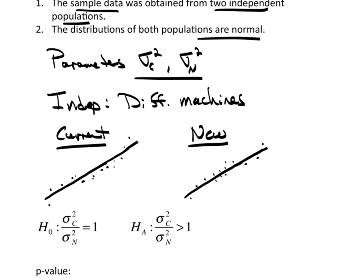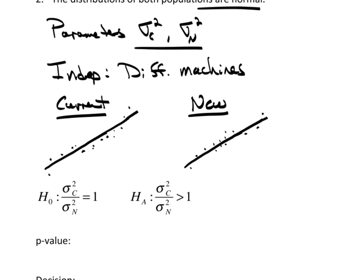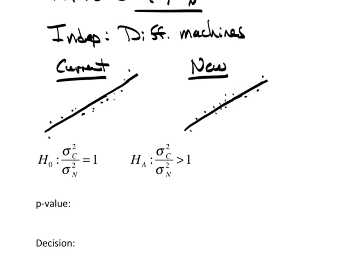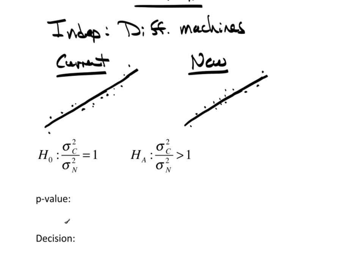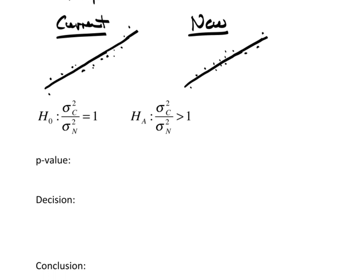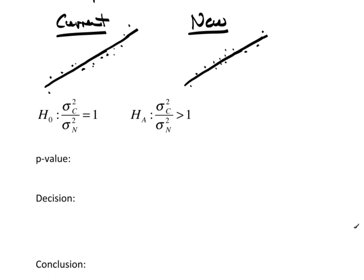And then, I'm saying that this same ratio would be greater than one on the alternative hypothesis. Because, if the new process has a smaller variability, then a big number divided by a small number will be bigger than one. And, I've already addressed my assumptions. I need to do an F test. Report the p-value, the decision, and the conclusion. So, again, for that, I'm going to switch back to TC Stats.